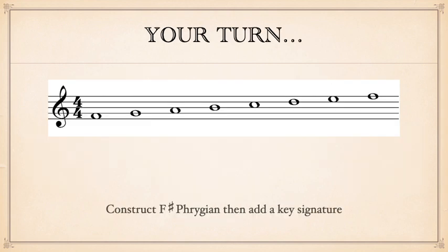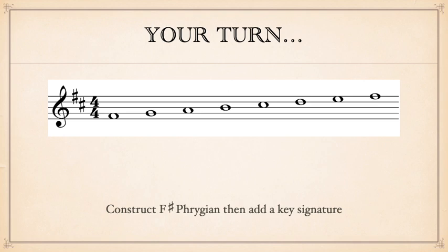Now it's your turn to practice. Construct F-sharp Phrygian and then add a key signature. Recall whether Phrygian is more like major or more like minor and add the color note. You should have found that F-sharp Phrygian is more like minor mode, but with lowered scale degree two. So F-sharp minor has three sharps, but the G-sharp is removed to account for that lowered scale degree two, or Ra. So your key signature has F-sharp and C-sharp — the two-sharp key signature.